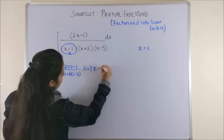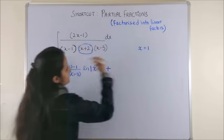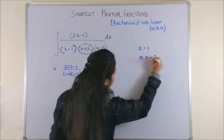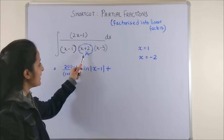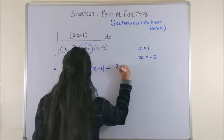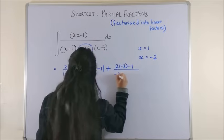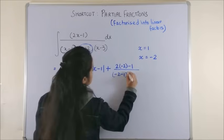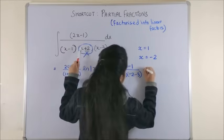So this would give us, if you could do it mentally that's good enough, log of the factor which you have just avoided. Plus, the next time put this factor equal to zero, that gives you x is equal to minus two. Now avoid this one and substitute x as minus two everywhere else, so you get two into minus two minus one upon minus two minus one into minus two minus three, and log of the factor which we had avoided.